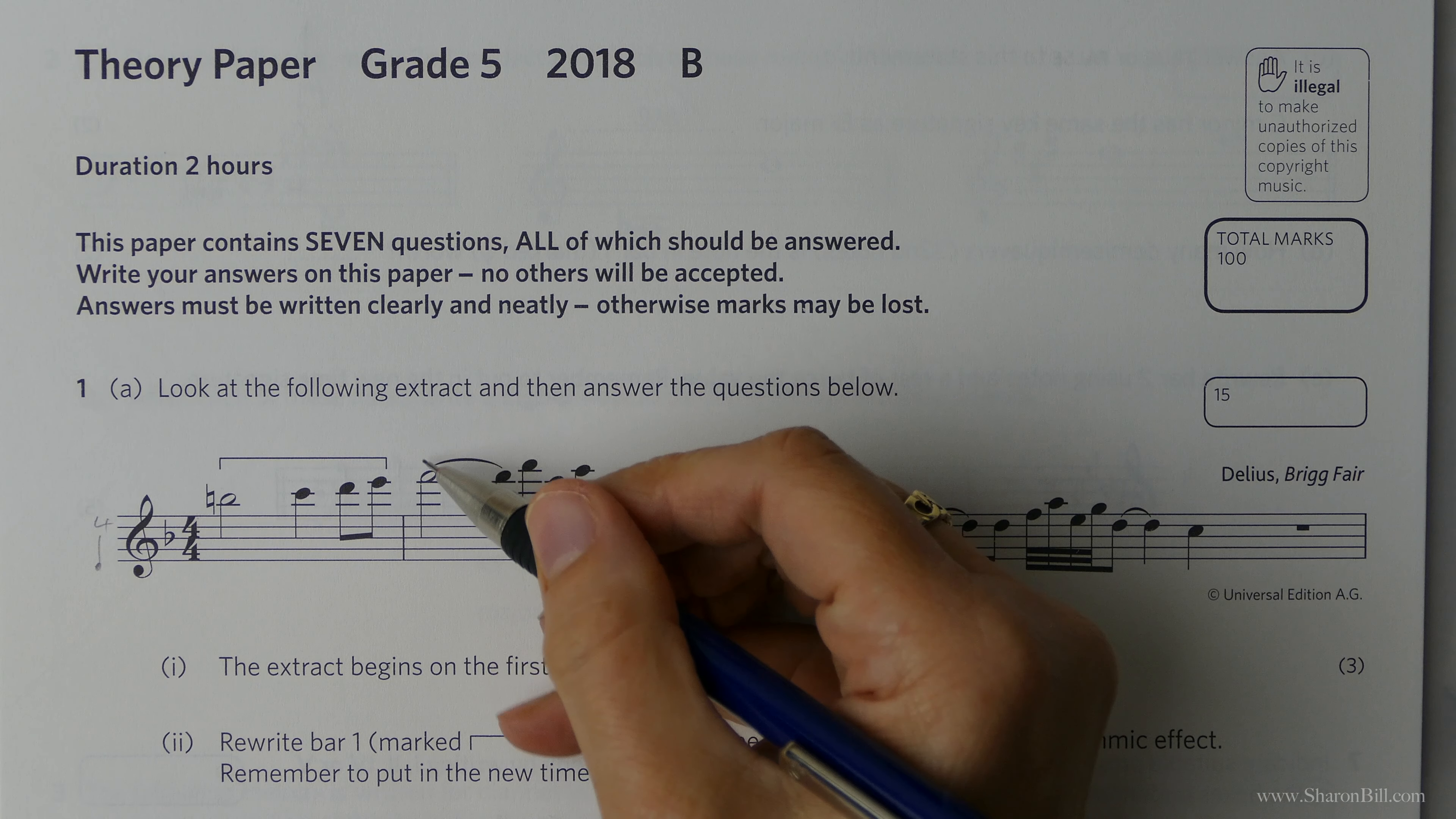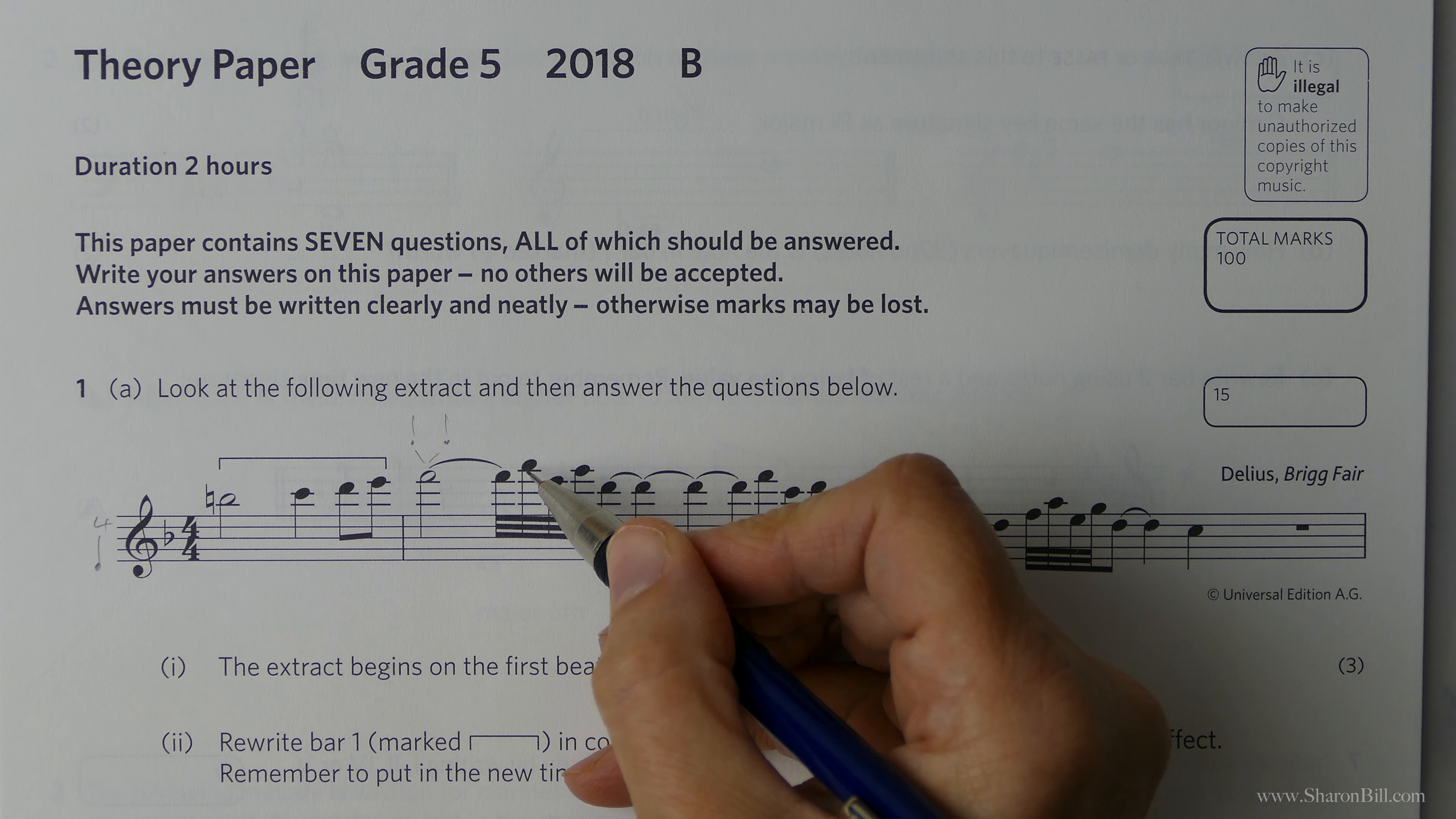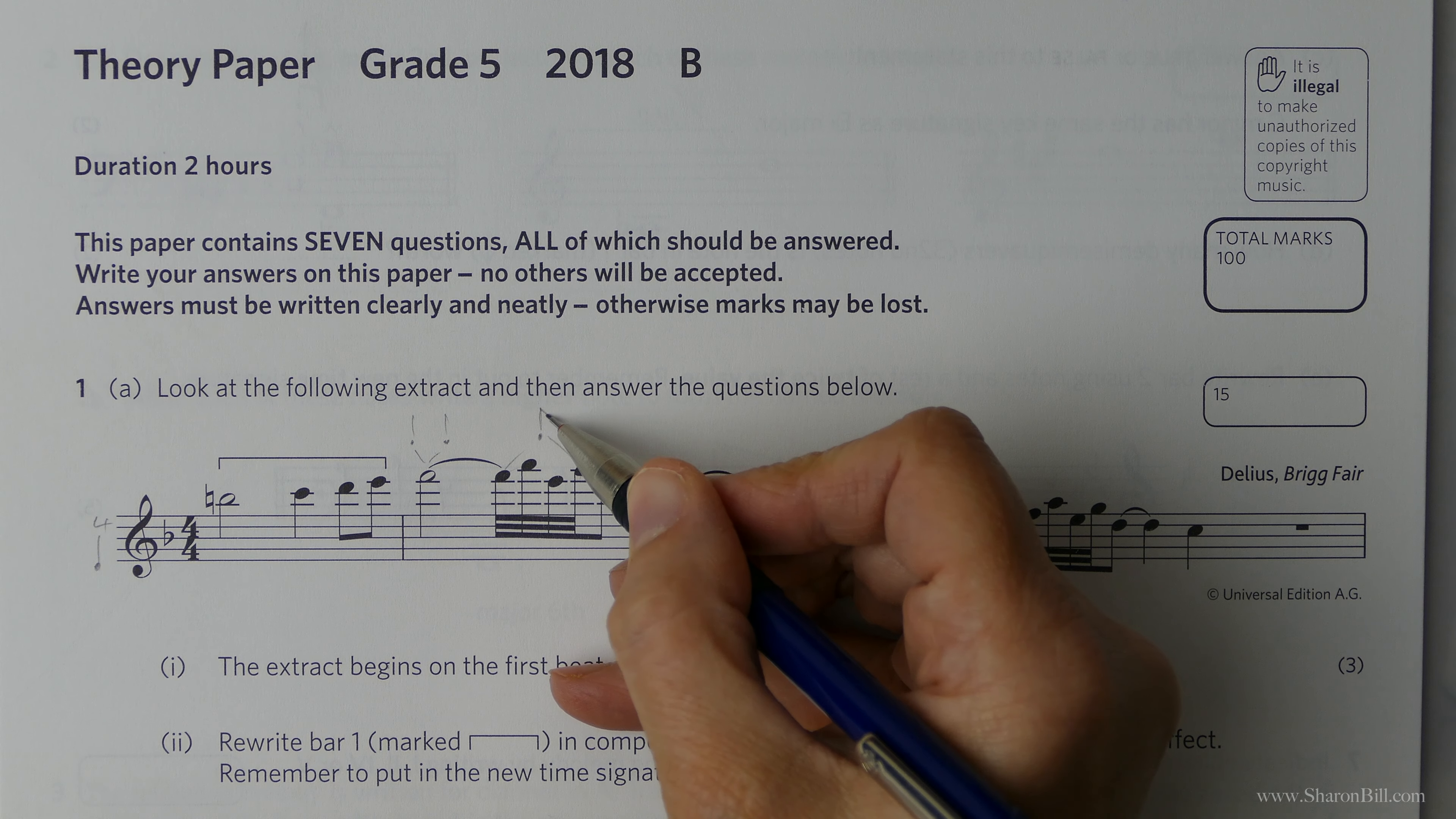And now, so there, this minim, this half note divides into 2 crotchets, 2 quarter notes. Now here we know that 4 32nd notes or 4 demi-semiquavers equal a quaver.